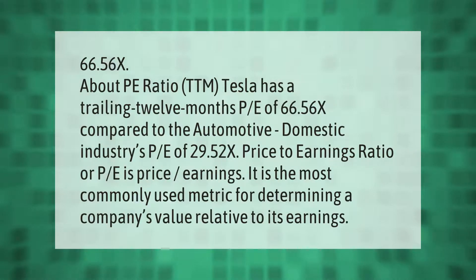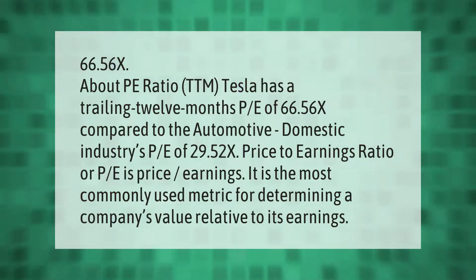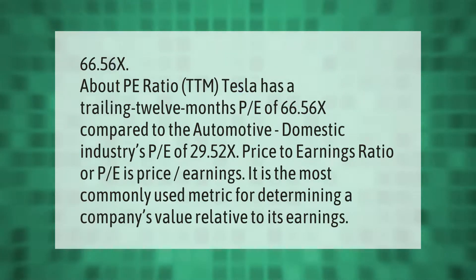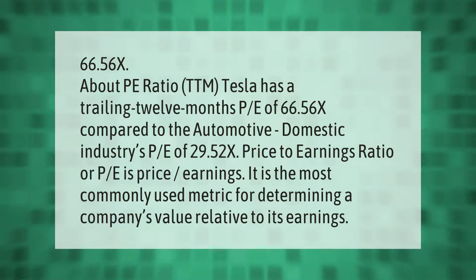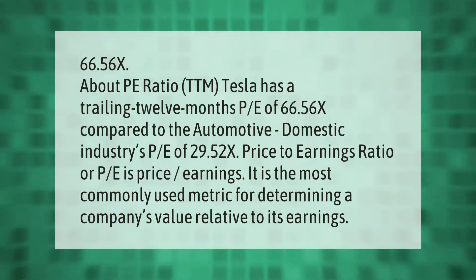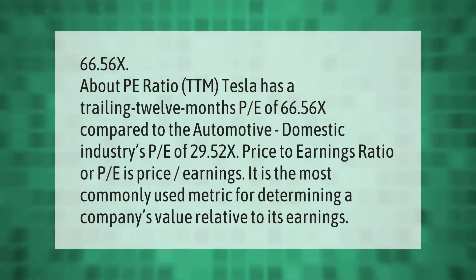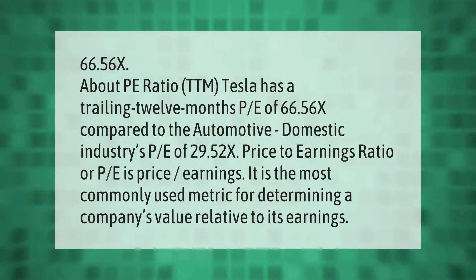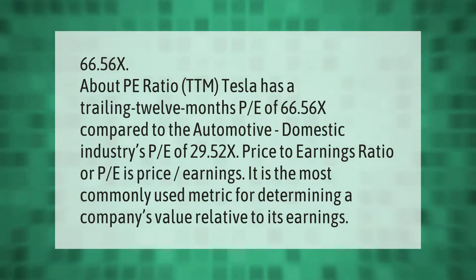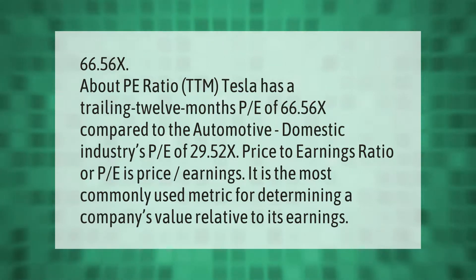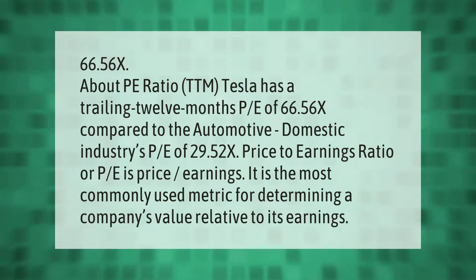Tesla has a trailing 12 months P/E of 66.56x compared to the automotive domestic industry's P/E of 29.52x. The price-to-earnings ratio, or P/E, is the most commonly used metric for determining a company's value relative to its earnings.